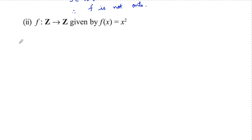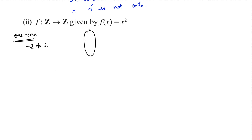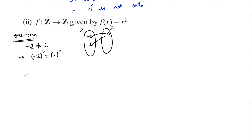Now let's check the second function: f from ℤ to ℤ, integers to integers, given by f(x) = x². Let's check for one-to-one. Clearly, −2 ≠ +2, but (−2)² = 4 and (+2)² = 4, so (−2)² = (+2)². This indicates that for x₁ ≠ x₂ we are getting f(x₁) = f(x₂).